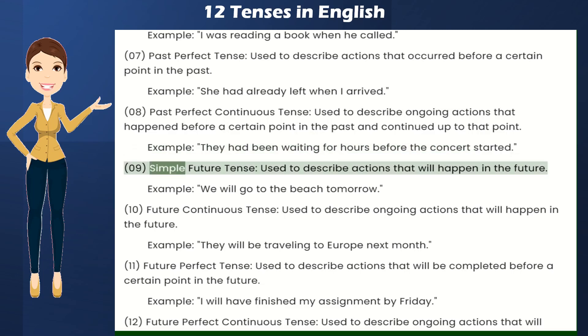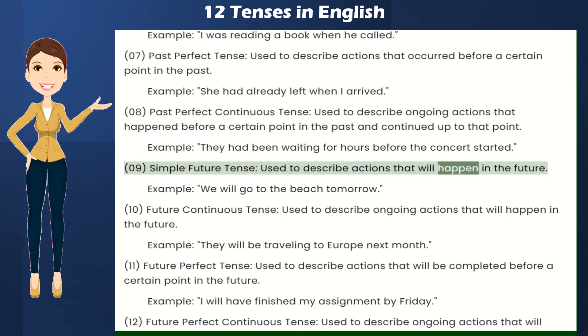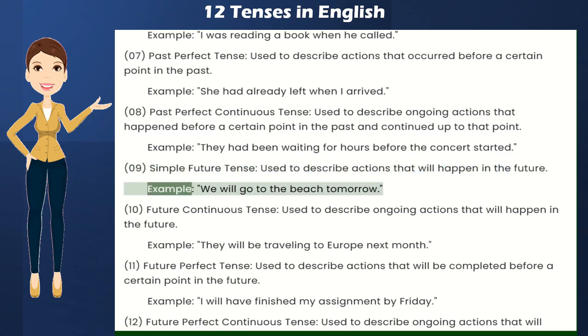Simple Future Tense — used to describe actions that will happen in the future. Example: We will go to the beach tomorrow.